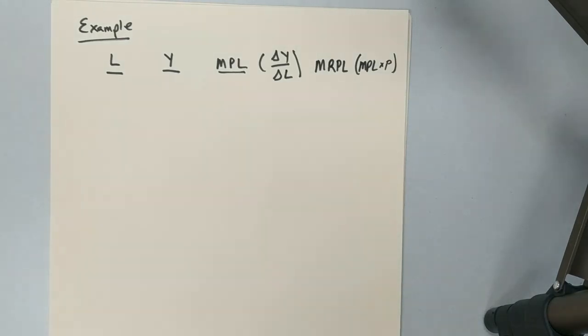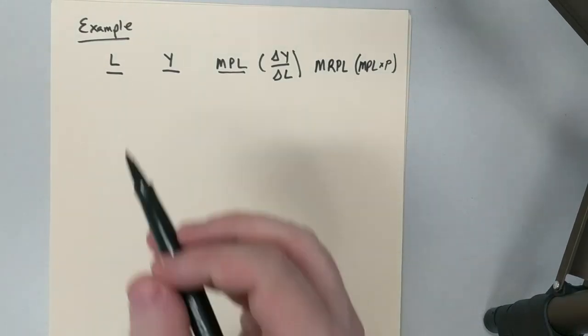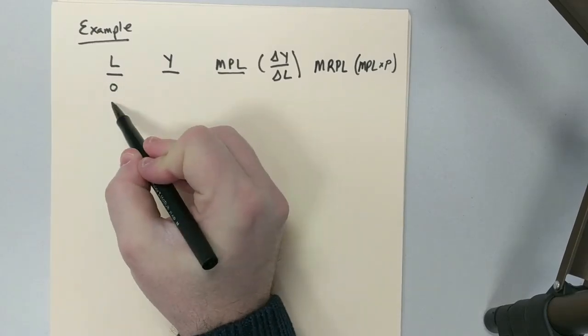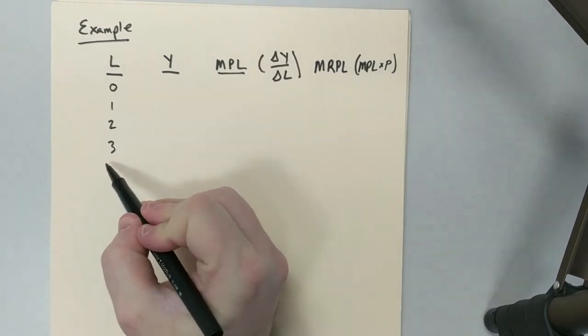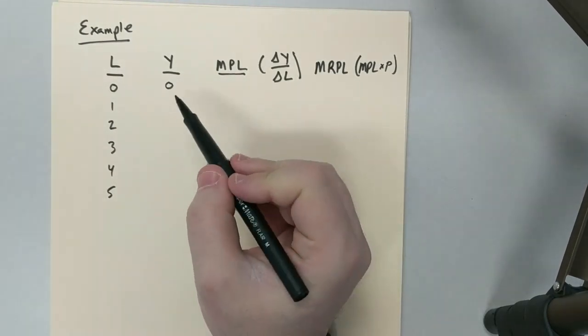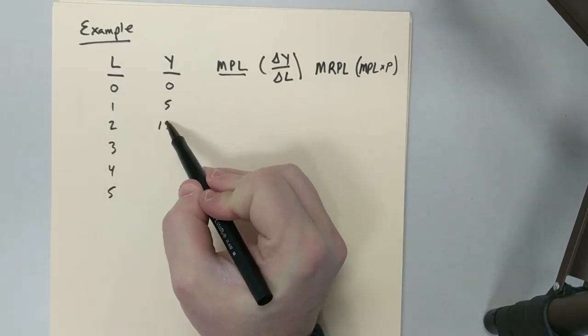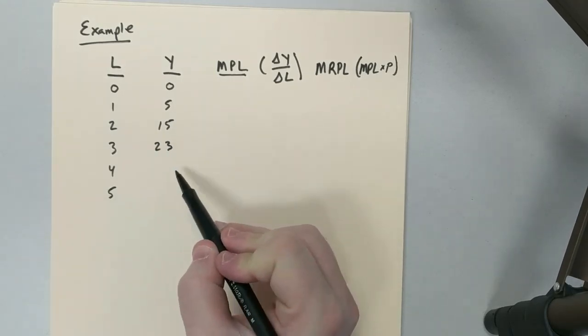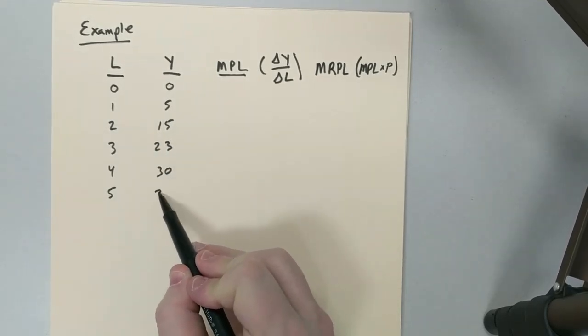So let's go ahead and just create some data here, which I'll just pull out of thin air. Let's say there's zero workers, 1, 2, 3, 4, and 5 workers. And let's just say that the output is 0, 5, 15, 23, 30, and 32.